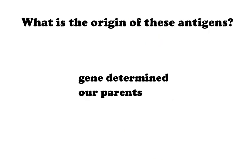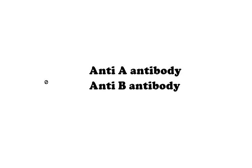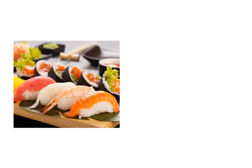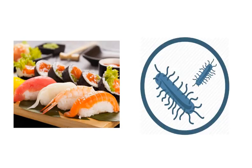Our next question is: what is the origin of these antigens? They are gene-determined, so we achieve them from our parents. Now we will go for antibodies, also termed as agglutinins. In the ABO system, there are two antibodies: anti-A antibody and anti-B antibody. At the time of birth they are absent, but after birth they develop — Antigen A and B enter the body through food, bacteria, and other ways, and development of their antibodies is initiated.